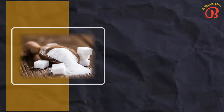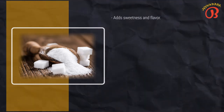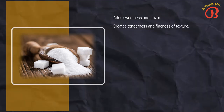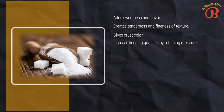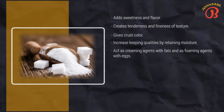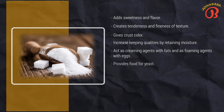Now let's talk about sugars. Sugars or sweetening agents have the following purposes in baking: they add sweetness and flavor; they create tenderness and fineness of texture, partially by weakening the gluten structure; they give crust color; they increase keeping qualities by retaining moisture; they act as creaming agents with fats and as foaming agents with eggs; and they provide food for yeast.